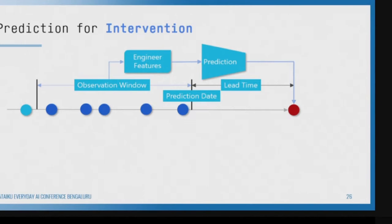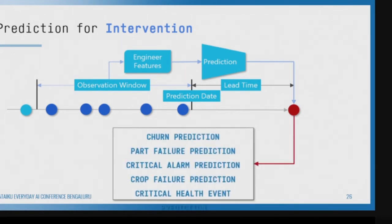There are three important reasons why companies build prediction models. The first is what I call intervention — predict to intervene. When we are predicting a negative event like customer churn, employee churn, student failure in an exam, or failure of a crop, we are trying to predict to intervene and say: what can I do before it happens? This is where proactiveness comes in — one of the promises of AI is we can make proactive decisions and prevent bad things from happening.